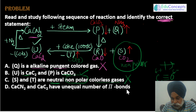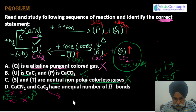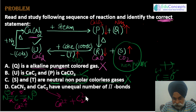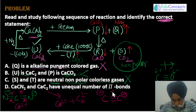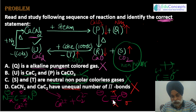Option 4 says calcium cyanamide and calcium carbide have an unequal number of pi bonds. Breaking down calcium cyanamide gives the cyanamide ion with two pi bonds and two sigma bonds. Breaking down calcium carbide gives carbide ion C₂²⁻, which also has two pi bonds and one sigma bond. Both have two pi bonds, so the statement that they have unequal pi bonds is wrong.